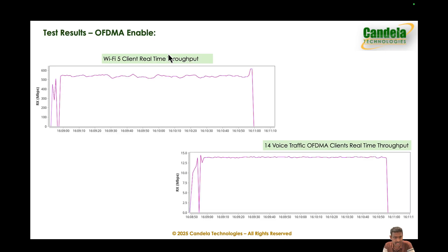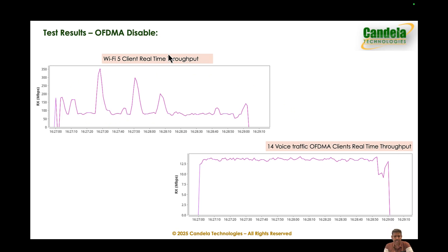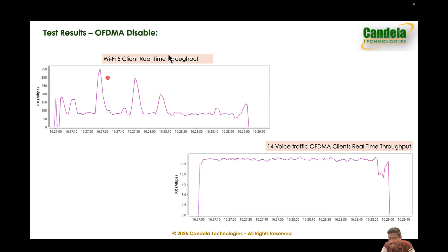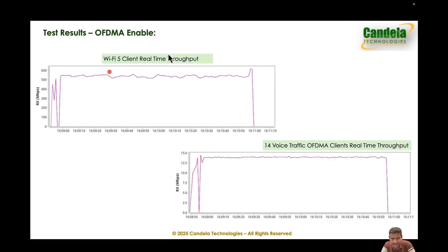The key message is that there are benefits with OFDMA — we just have to craft the right test case and use the right test tools to see those gains. One final remark: the OFDMA disabled throughput was not very stable because post-processing sniffer logs showed the OFDMA capable clients were experiencing quite a bit of collisions. Voice access category has aggressive contention window parameters, causing rate adaptation to reduce the rate — which is why we see instantaneous spikes up to 350 Mbps that cannot be sustained. With OFDMA enabled, the rates were stable and collisions were significantly reduced. Thank you for your time.